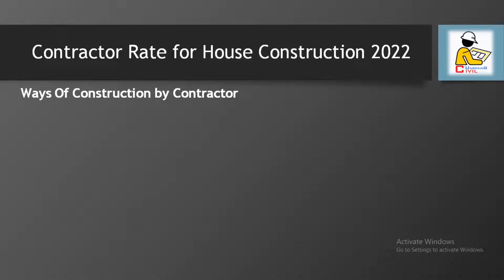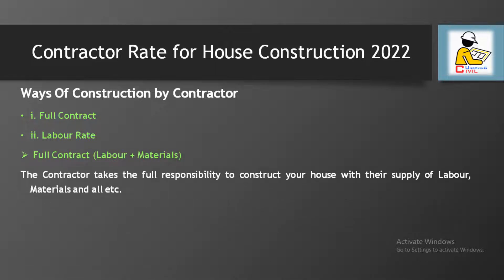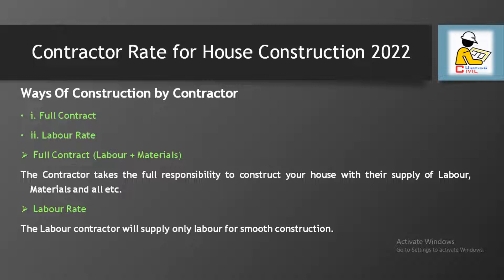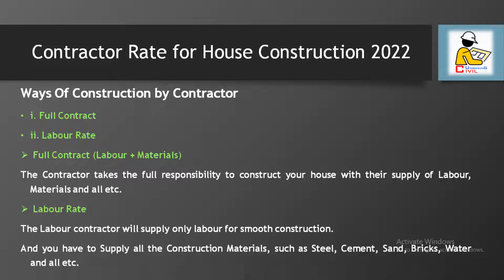Now let's know about the different ways of construction by contractor. The first one is full contract and the second is labor rate contract. In full contract, the contractor takes full responsibility to construct your dream house by arranging all labor, materials, and so on — you just pay the settled amount. In labor rate contract, the contractor supplies only labor, and you have to arrange all construction materials such as steel, cement, sand, bricks, water, and so on.